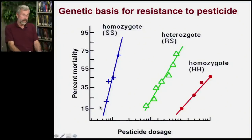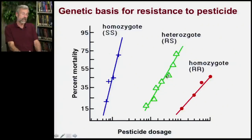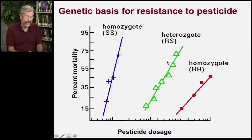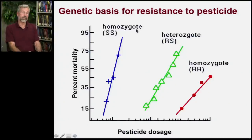And it took almost 10 times as much pesticide to get the same effect. So what you're doing now is selecting out the rest of that susceptibility allele until what you've got left is just the capital R allele — the resistant allele.